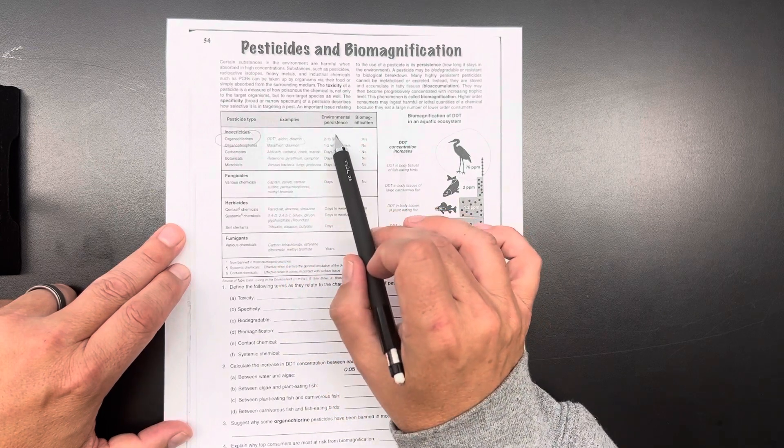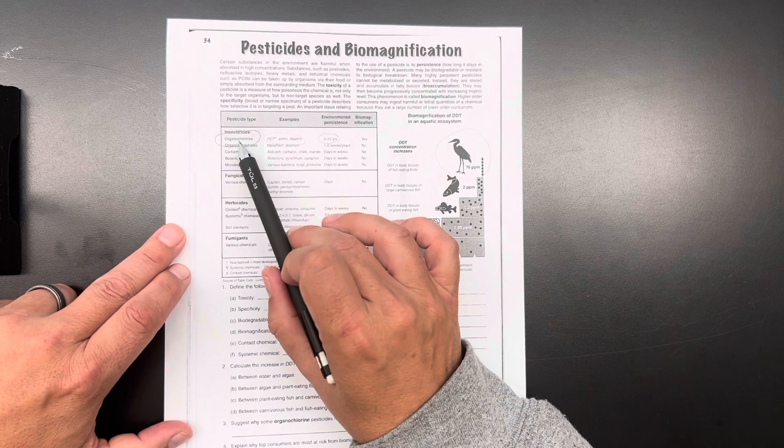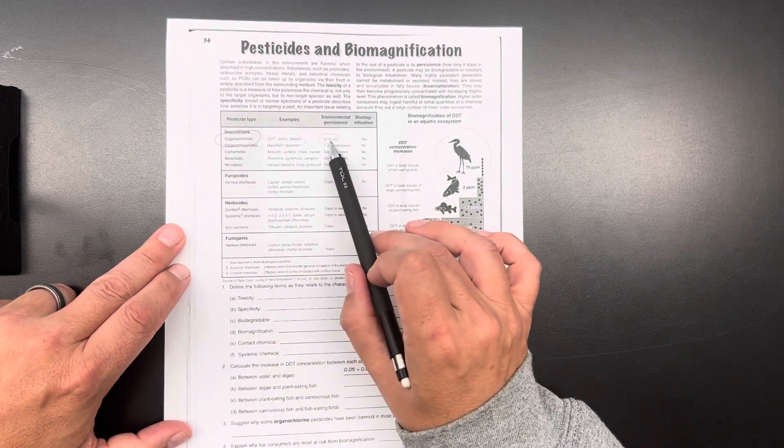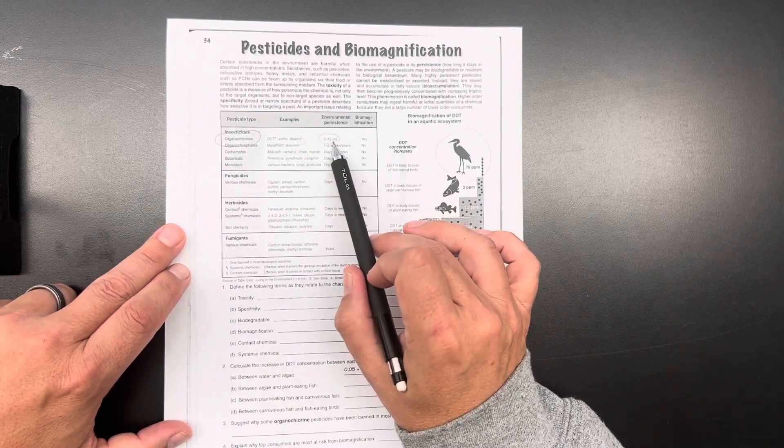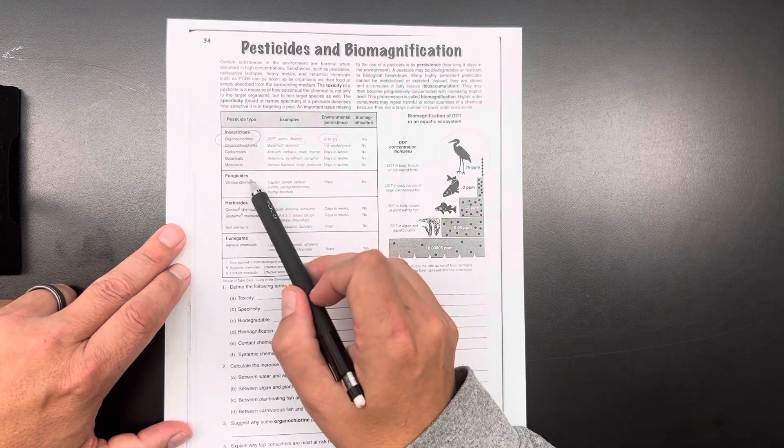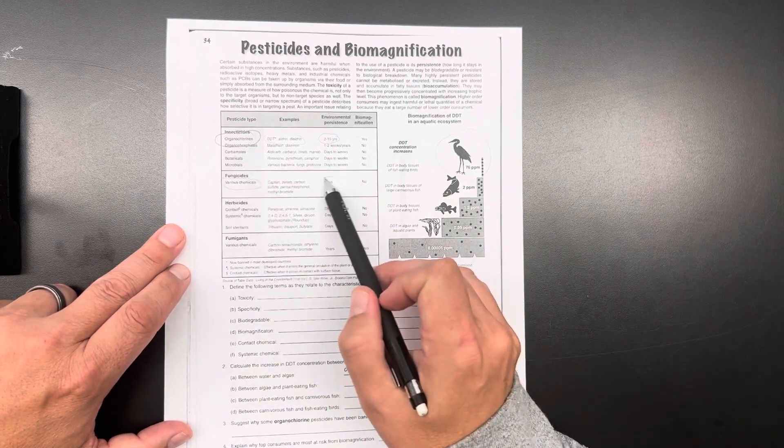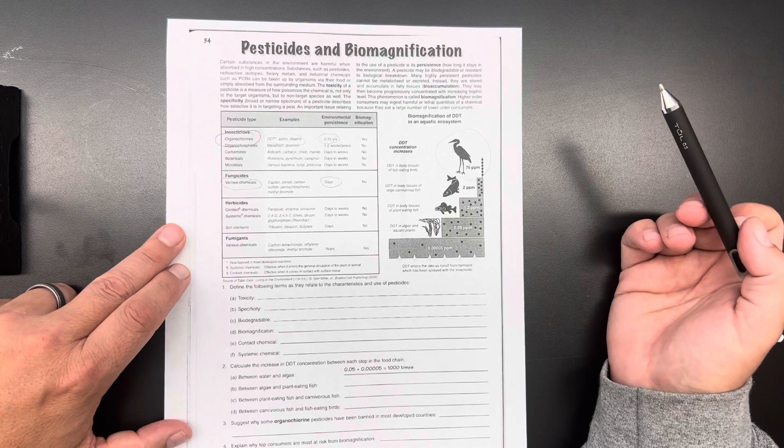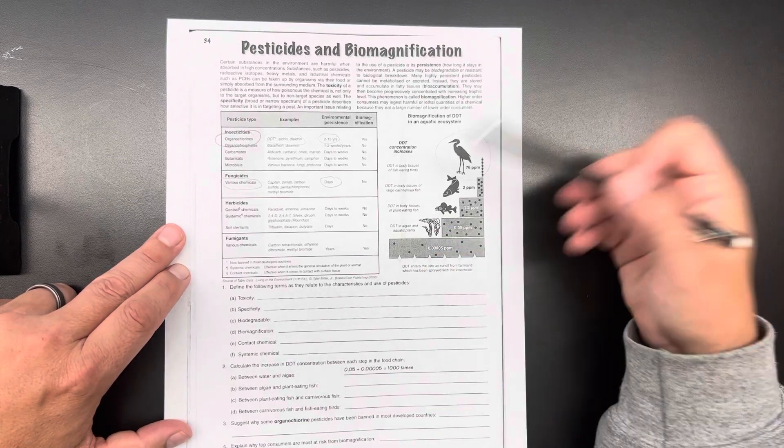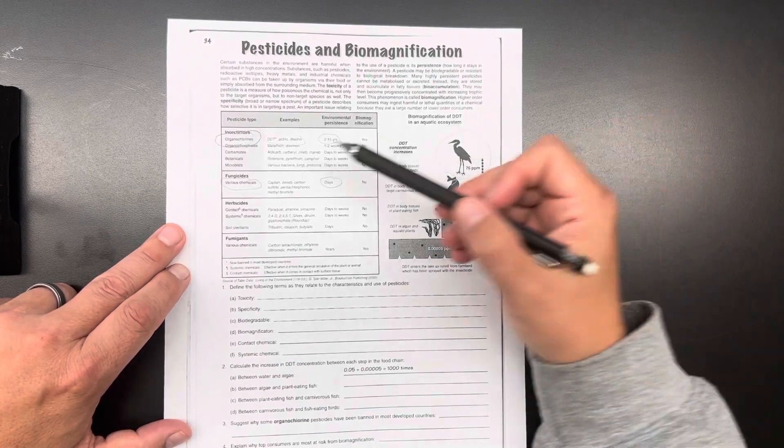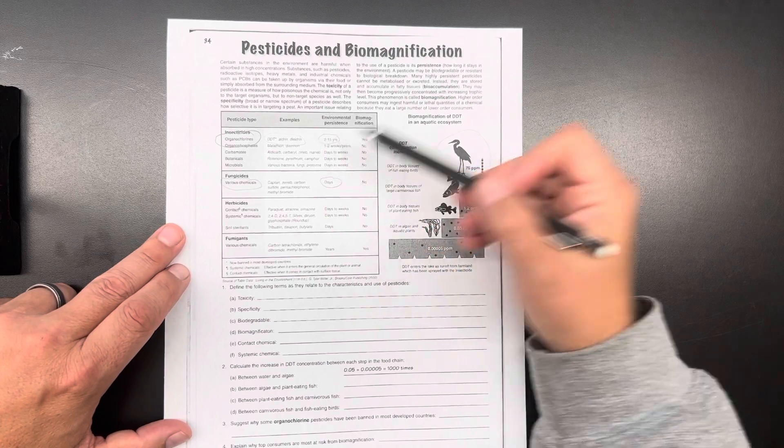They tell you how long it lasts in the environment. So these organochlorines last 2 to 15 years in the environment. Where this fungicide here is just a matter of days. And then it's not affecting the environment anymore. But these ones can last for years and affect the environment the whole time.